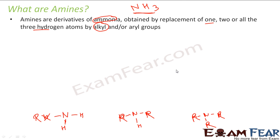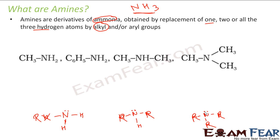So you had ammonia NH3. You replace either one hydrogen — that is an amine. You replace two hydrogens with R, that is my alkyl or aryl group — that is an amine. You replace all three hydrogens — that also becomes an amine. So there are lone pairs of electrons here. These are my amines.